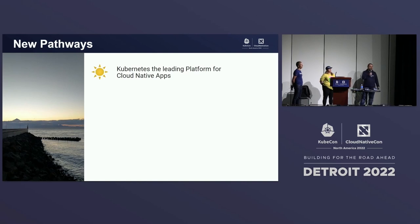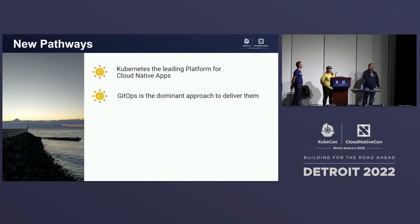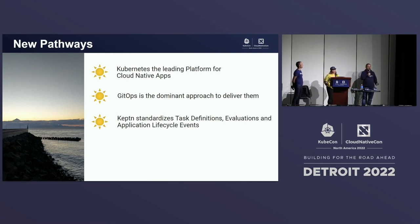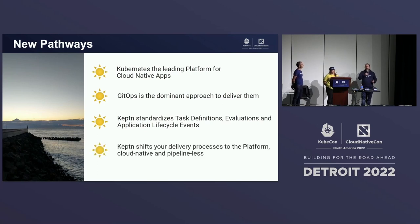We decided to go on a new path. Kubernetes is the leading platform for cloud-native apps — a few thousand people here at the conference proves that. GitHub is the dominant approach to deliver these apps, so we need to find a way to get continuous delivery on the platform. Therefore, we try to standardize task definitions, evaluations, and application lifecycles using Keptn — shifting your delivery process to the platform in a cloud-native and pipeline-less way.